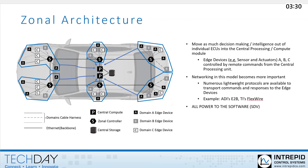In a zonal architecture, intelligence is moved away from individual ECUs into the central compute module. The devices on the edge become mostly smart actuators and sensors, not making decisions by themselves, but leaving that to the software in the central compute module. This architecture approach not only reduces wiring and the number of ECUs, but also provides a good platform for a software-defined vehicle, which is a goal of most OEMs.